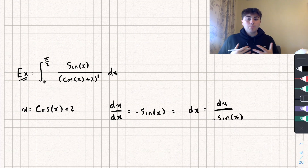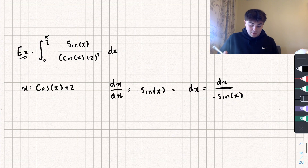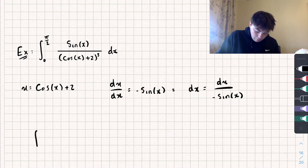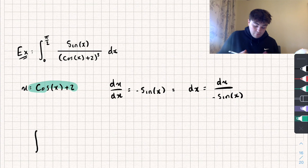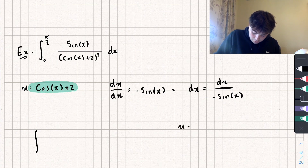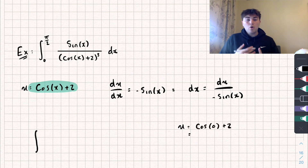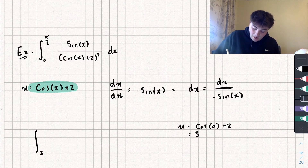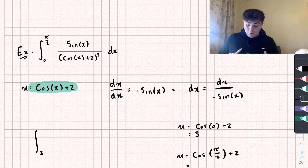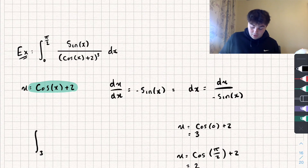Substituting everything back into the integral and changing the limits: when x equals 0, u equals cos(0) plus 2 — cos(0) is 1, so 1 plus 2 gives a lower limit of 3. When x equals π/2, u equals cos(π/2) plus 2 — cos(π/2) is 0, so 0 plus 2 gives an upper limit of 2.